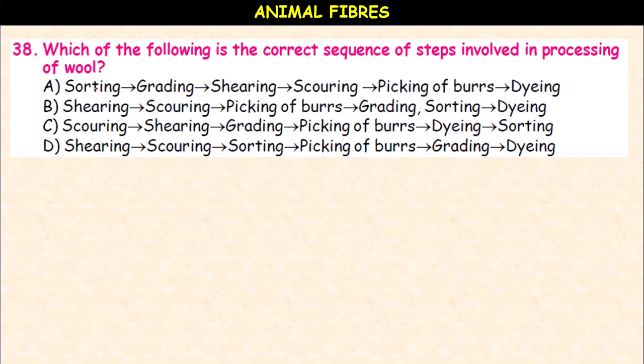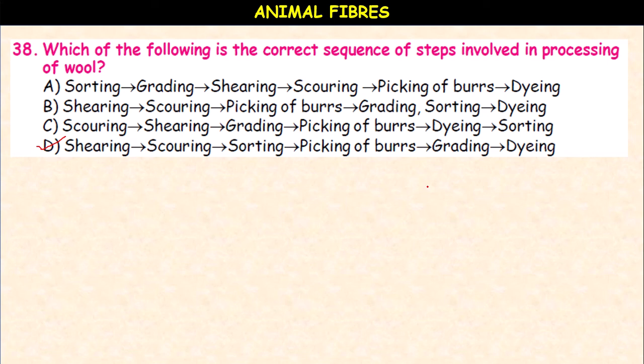Which of the following is the correct sequence of steps involved in processing of wool? Option D is correct: first shearing, then scouring, then sorting, then picking of burrs, then grading, and then dyeing. This is the actual process of wool making.